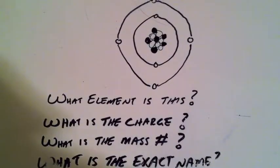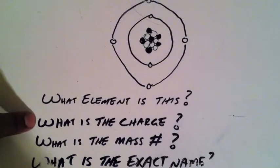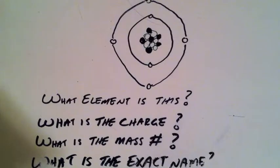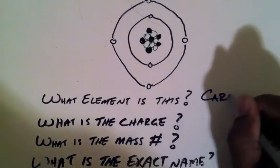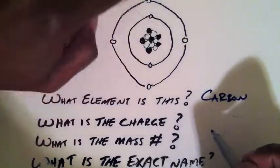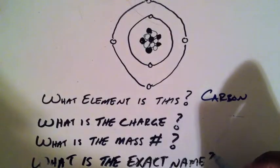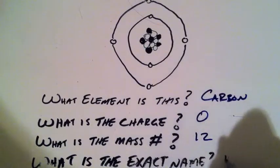Pause for a moment here and see if you can get which element this is, the charge, the mass number, and the exact name. You will see that this is carbon because it has six protons. It also has six electrons, giving it a neutral charge, and a mass number of twelve. The exact name is carbon-12.